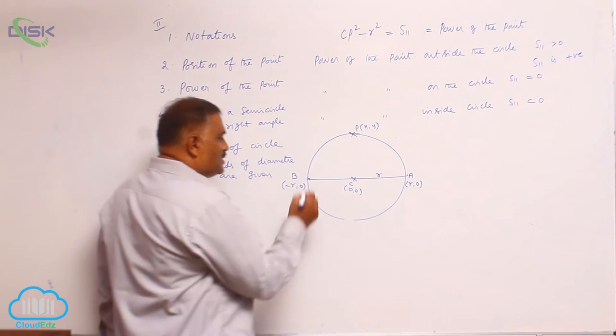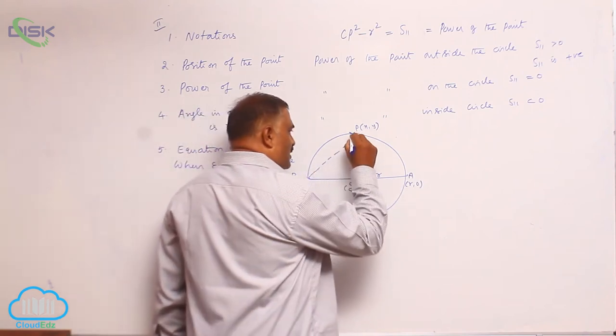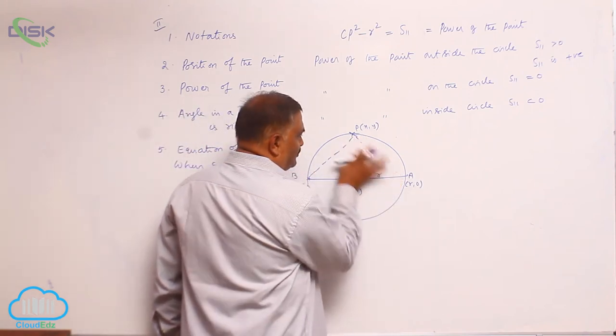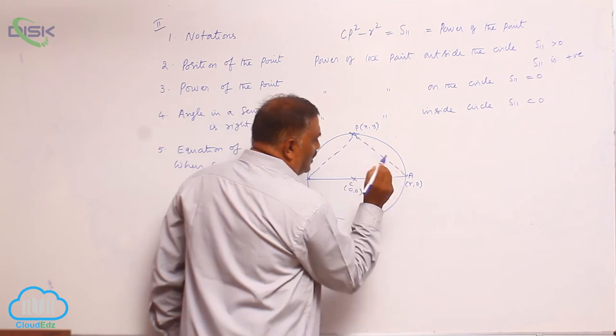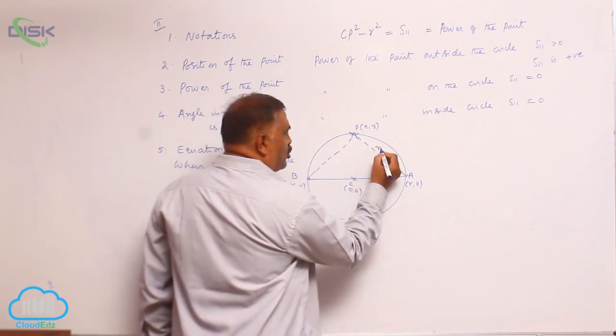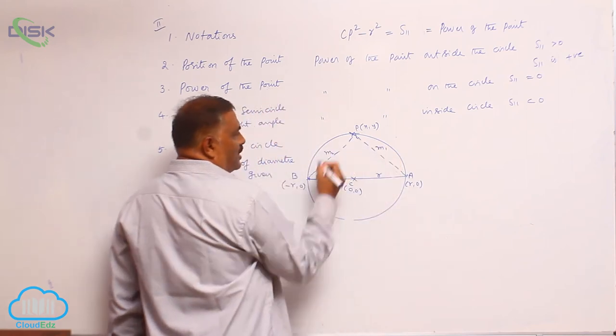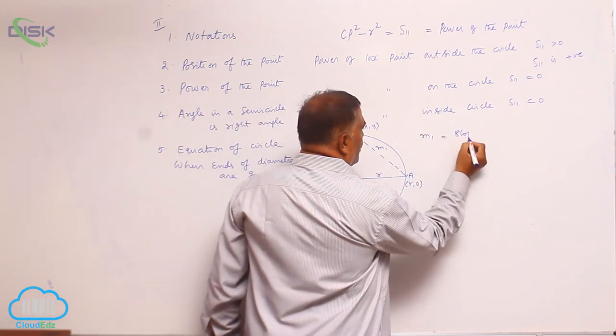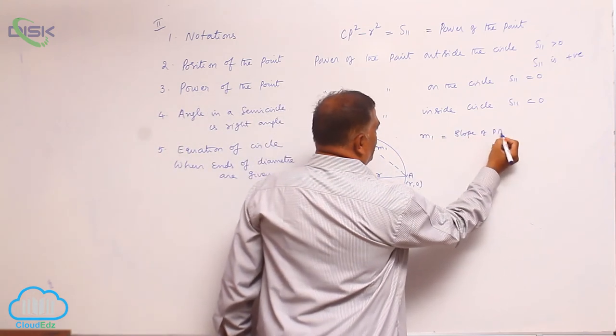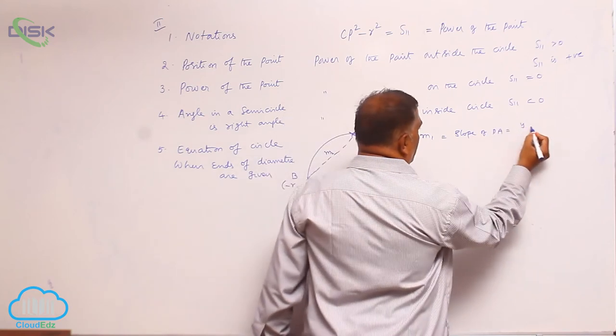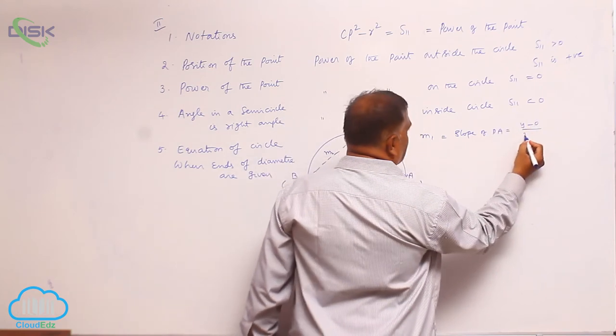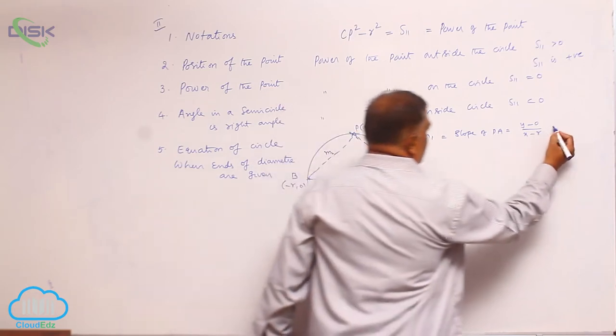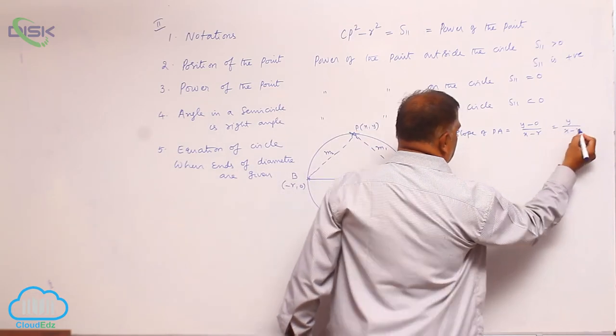Now join these two. Now we require slope 1 here, slope 2 here. M₁ is equal to slope of PA, that is y minus 0 by x minus R, that is y by x minus R.